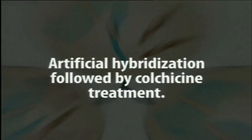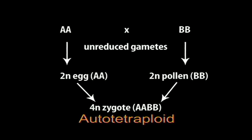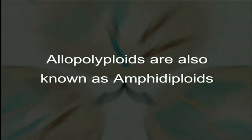Allopolyploidy has been artificially induced in many crops by crossing two or more different species and then doubling the F1 hybrids by colchicine treatment. For example, crossing two diploid species AA and BB produces a hybrid AB, which is generally a sterile hybrid. After colchicine treatment, the two genomes double and the allotetraploid formed is AABB — a complete, stable genomic constitution. Allopolyploids are also known as amphidiploids because the chromosomes remain in a diploid condition with two separate genomes (genome A and genome B) within a common cell.